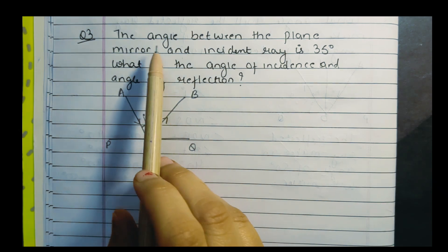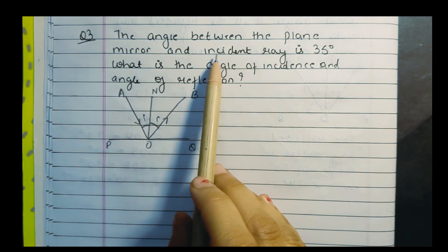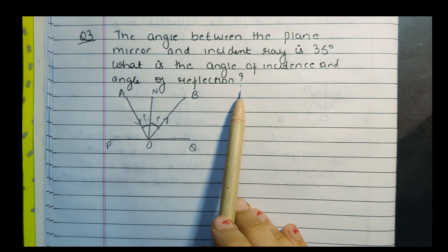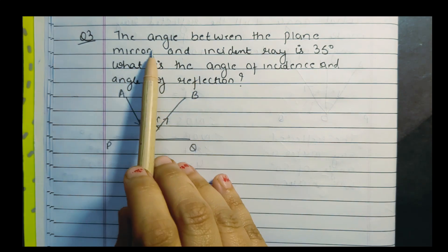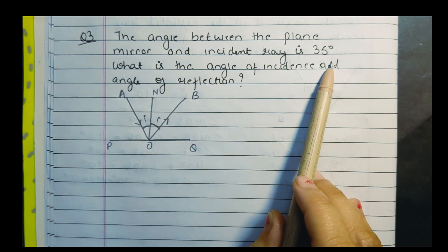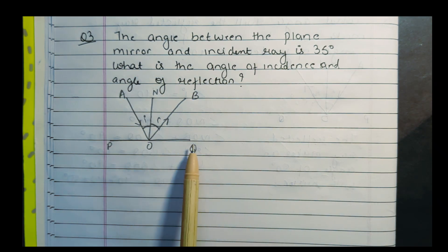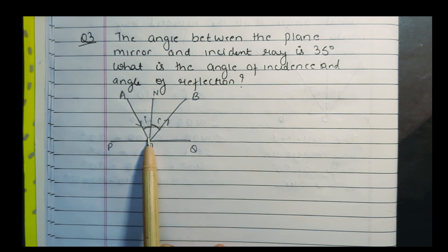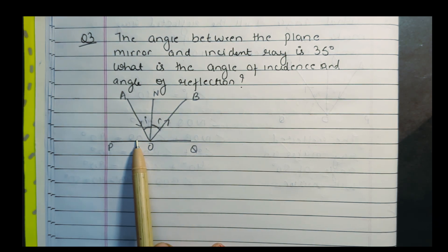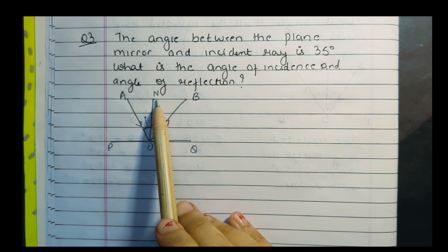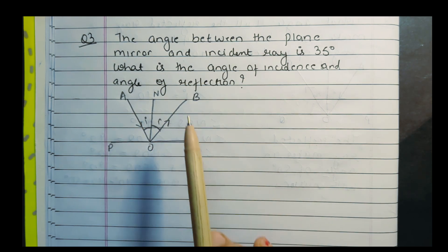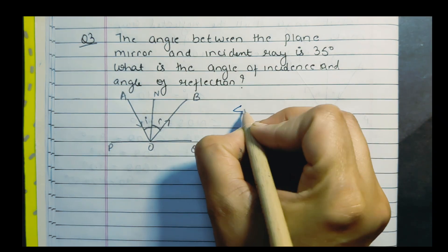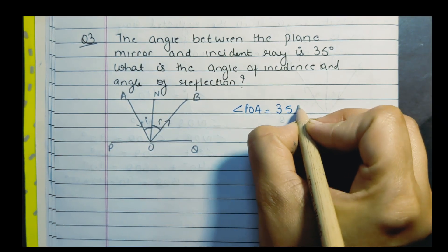Coming to question number 3: the angle between the plane mirror and the incident ray is 35 degrees. What is the angle of incidence and the angle of reflection? PQ is the plane mirror and AQ is the incident ray, making an angle of 35 degrees. AON is the angle of incidence and NOB is the angle of reflection. From the figure, angle POA is equal to 35 degrees.